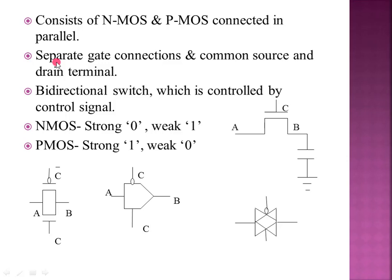In pass transistor logic, we use an NMOS. You use the control signal at the gate of the NMOS and the source as the pass signal. When the transistor is on, the signal passes to the output. That is the pass transistor logic.